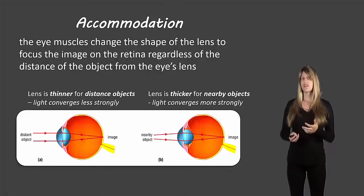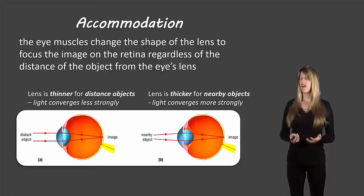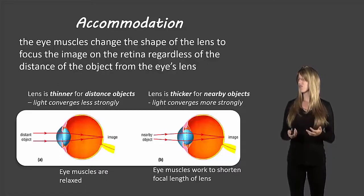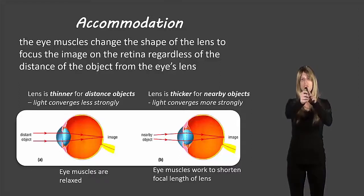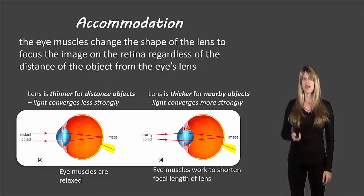The lens is thinner for objects that are further away so the light converges less strongly, and the lens is thicker for nearby objects so that the light converges more strongly. The eye muscles are relaxed when we look far away, and they work to shorten the focal length when something is nearby. You can actually feel this — hold your thumb in front of your face and shift your focus between your thumb and something far away across the room, and you'll be able to feel those muscles in your eye working.